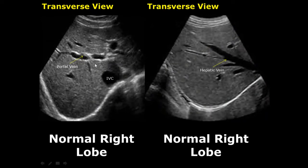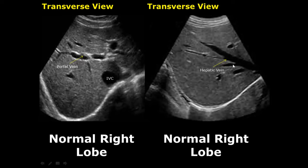In transverse view of the liver we can see the blood vessels. The portal vein will have hyperechoic walls. Right here is the inferior vena cava in cross-section, and over here these are the hepatic veins — they will not have hyperechoic walls.